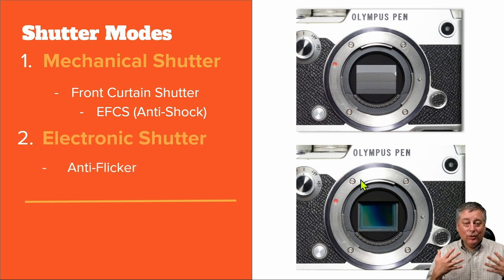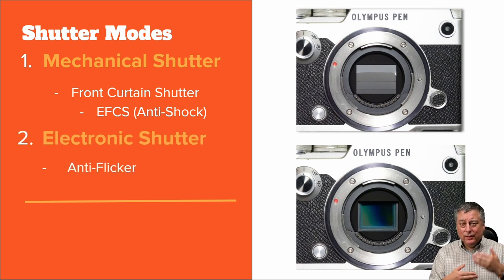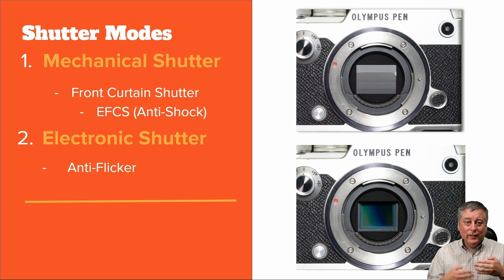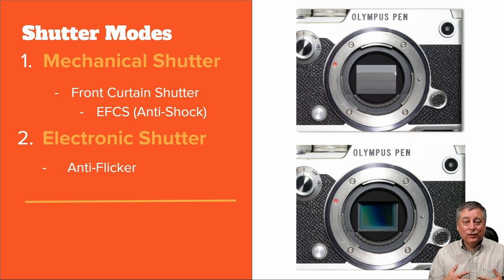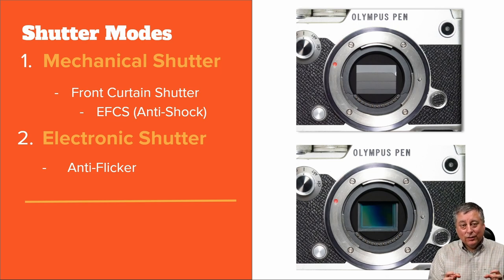Now let's talk about electronic shutter. It's very simple. Basically the shutter blades stay open, exposing the sensor. And then when you push the shutter button, it'll turn the sensor on and then back off again for whatever shutter speed you've set, and that will create the exposure. Now some electronic shutters have a feature called anti-flicker, which we'll talk about in a minute.